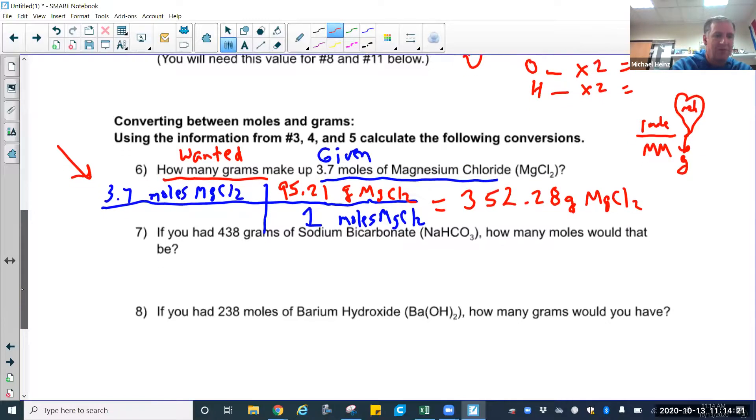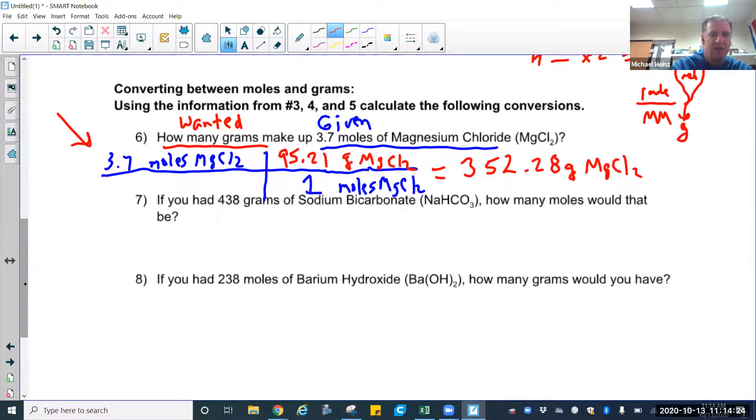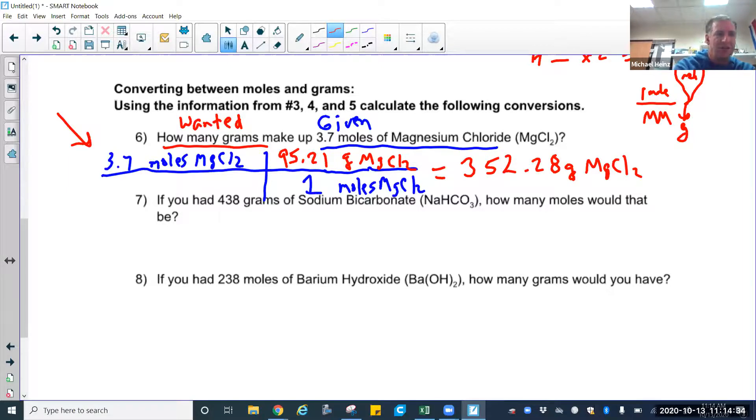So that would be what we call a one-step problem. That's just going from moles to grams. Let's use that molar mass again. The other one's sodium bicarbonate and the other one's barium hydroxide. Same type of problem. Sometimes you're going from moles to grams. Sometimes you're going from grams to moles. I encourage you to go back and look at that answer key and the steps are listed out there. Let's look and see what a two-step problem would look like.